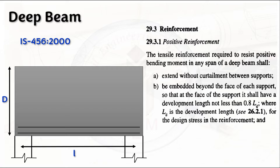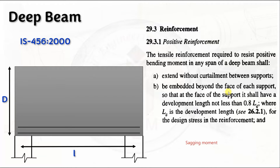Let us look into positive reinforcement. The positive bending moment is the sagging moment. When you have a beam with two supports you get a sagging moment — that is the positive bending moment — and in that area you provide positive reinforcement. The first condition is it shall extend without curtailment between supports. The second criteria is it must be embedded beyond the face of each support so that at the face of the support it has a development length not less than 0.8 times LD, where LD is the development length for the design stress in the reinforcement.